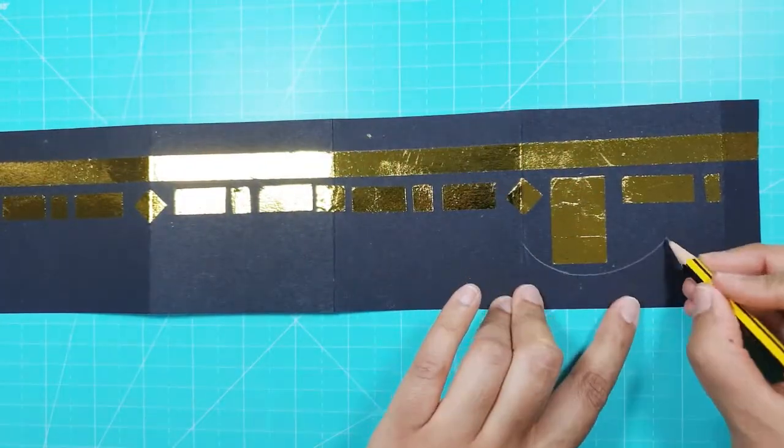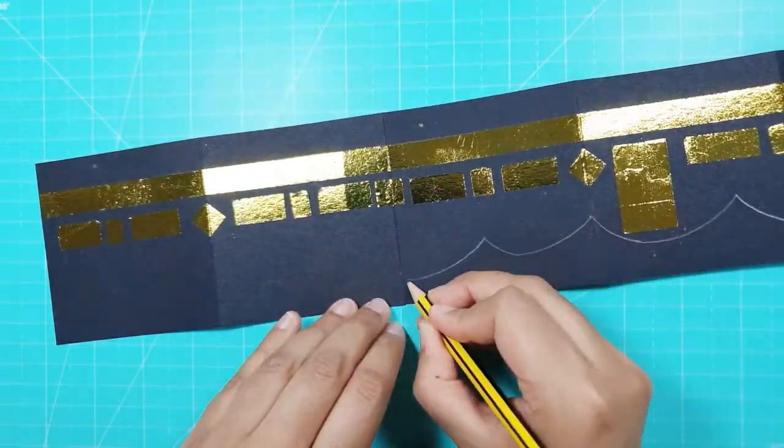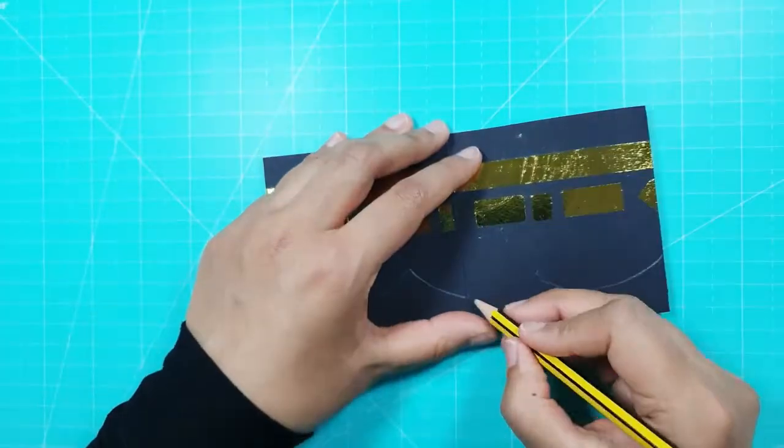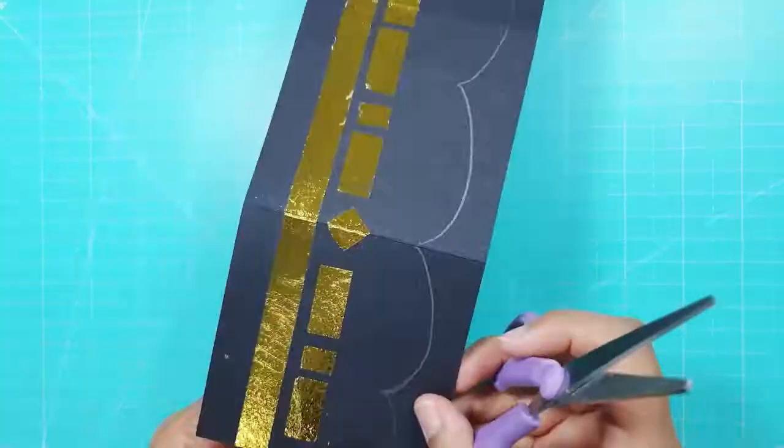Using a pencil I drew some curves at the bottom of the black card to show the drape of the Kiswah cloth. I made sure the ends of the card matched up and then I cut along the lines I had drawn.